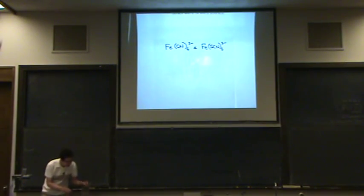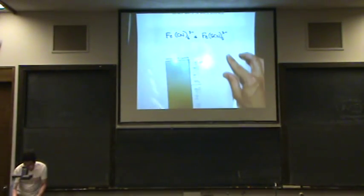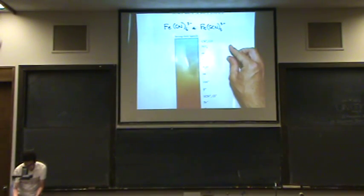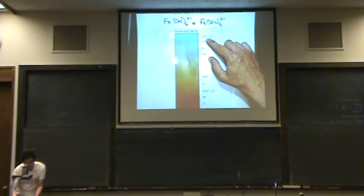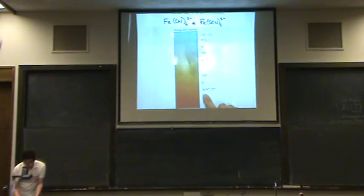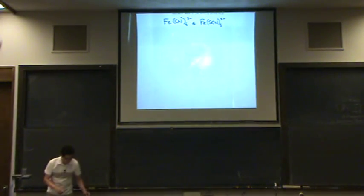Okay, according to our spectrochemical series, the one on the left is strong or weak field? It should be strong. Okay, because it's cyano. So that's strong. SCN, see it down here? That's a weak field. So the one on the right is weak field. So let's draw the picture for both of them so you can see how it would look different.